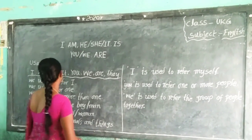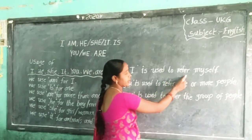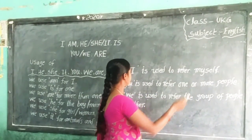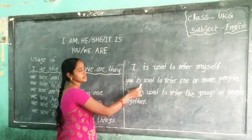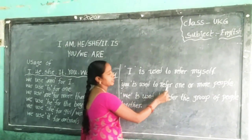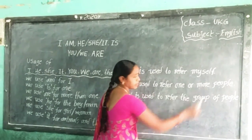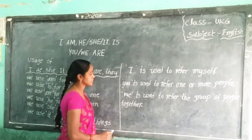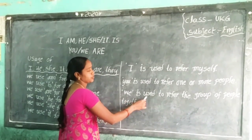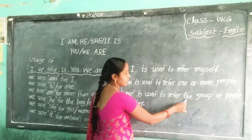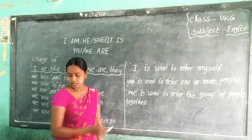Next: 'I'. 'I' is used to refer to myself. Next: 'you'. 'You' is used to refer to one or more people. Next: 'we'. We use 'we' to refer to a group of people together.